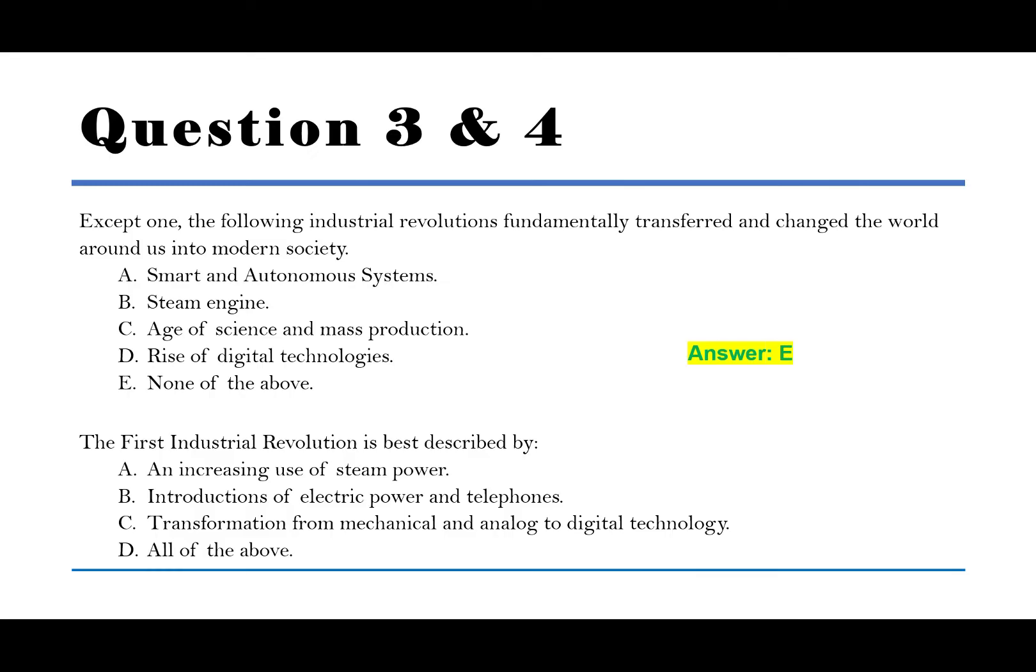Question number 4: First industrial revolution is best described by: A. Increasing usage of steam power. B. Introduction of electric powers and telephones. C. Transformation from mechanical and analog to digital technology. D. All of the above. The answer is A, increasing use of steam power.